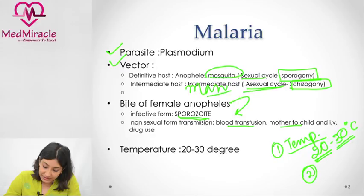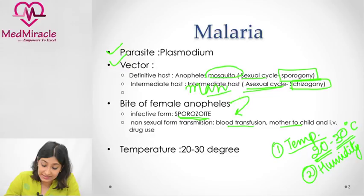Second is humidity — it requires humidity; the vector will increase in number and density, which helps to pass on Plasmodium. Third is rainfall.